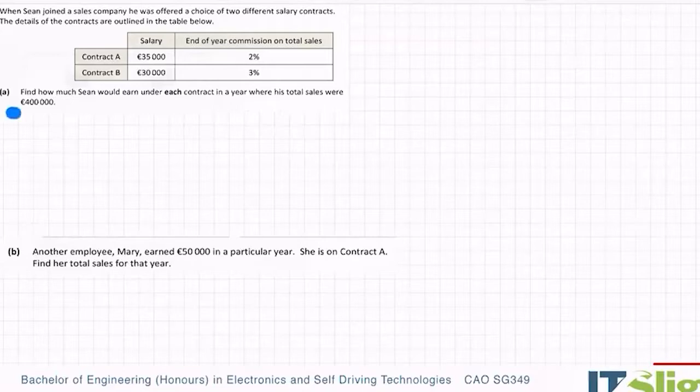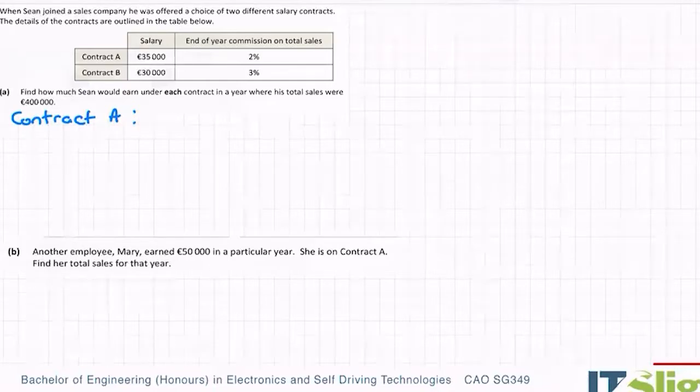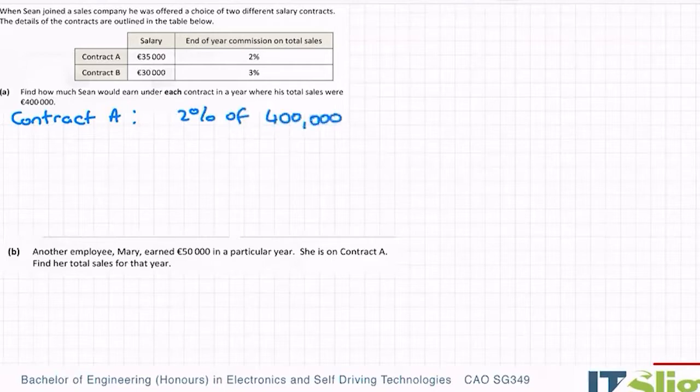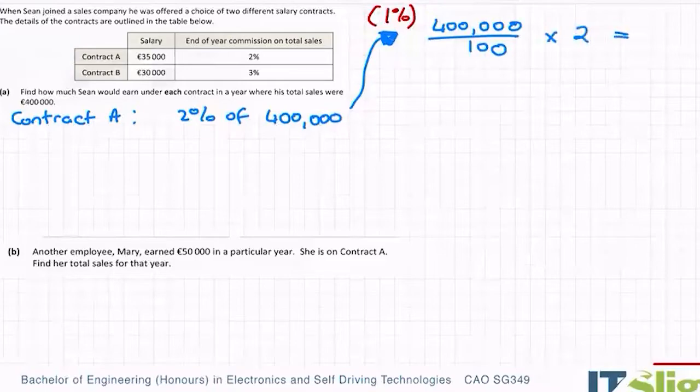Let's have a look at contract A. So in contract A, his sales is 400,000 and he gets to keep 2% of each. So I need to get 2% of 400,000. Now there's a few ways of getting percentages of numbers. You can divide by 100. Dividing by 100 gets you the equivalent of 1%. There's 100% in the full number, so dividing by 100 gets you 1%, and then you would multiply by 2 to give you the 2%, and that will give you 8,000.